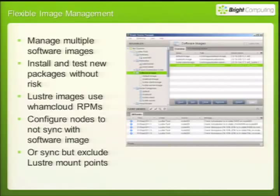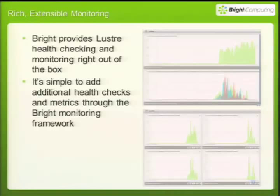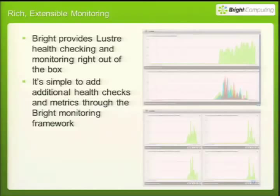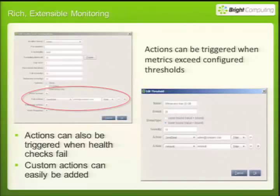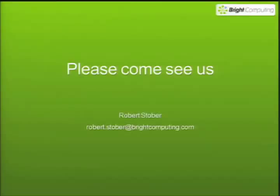We do use the WAM Cloud RPMs, and we can configure the nodes to either sync or not sync with a given software image. We collect 12 different Lustre metrics — things like files free, files used, cache hit ratio, bytes in, bytes out, etc. It's simple to add your own metrics if you need more, or to add additional health checks. You can associate actions with metrics exceeding certain thresholds or health checks failing, and put on as many actions as you want. There's so much more — come out to our table in the foyer. We'd like to talk to you. Thank you very much.